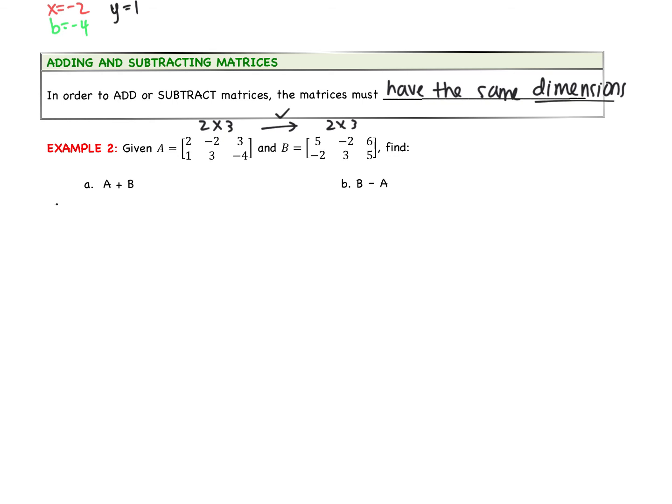So the first one, we are going to add A and B. So I'm going to rewrite A and I'm adding that to B. This should be pretty intuitive. You're going to add the corresponding elements. So we will add the first elements. Two add five gives us seven. Negative two add negative two gives us negative four. Three add six gives us nine. One add negative two gives us negative one. Three add three is six. And negative four add five is one. That's our answer.